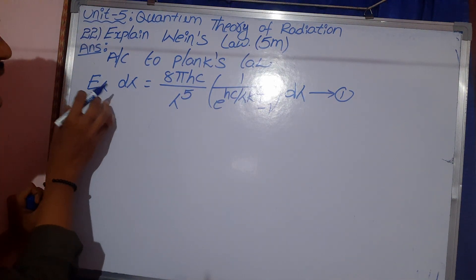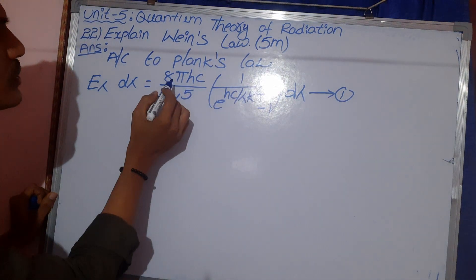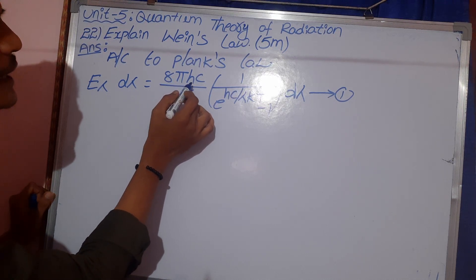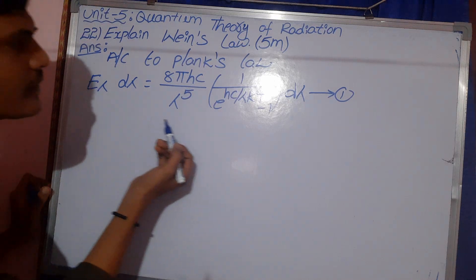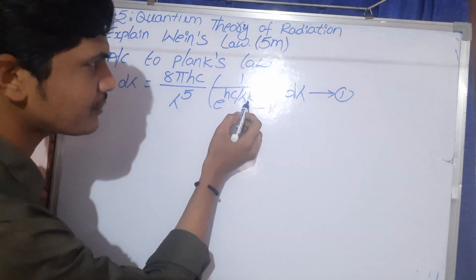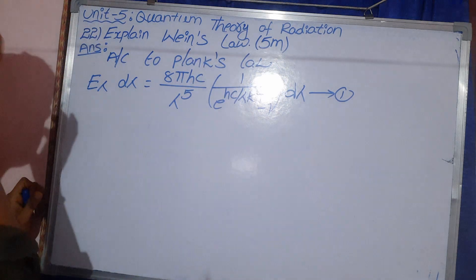So, E lambda means emissive power. 8 pi means integers, H means Planck constant, C means velocity of light, lambda means wavelength. K means Boltzmann constant.